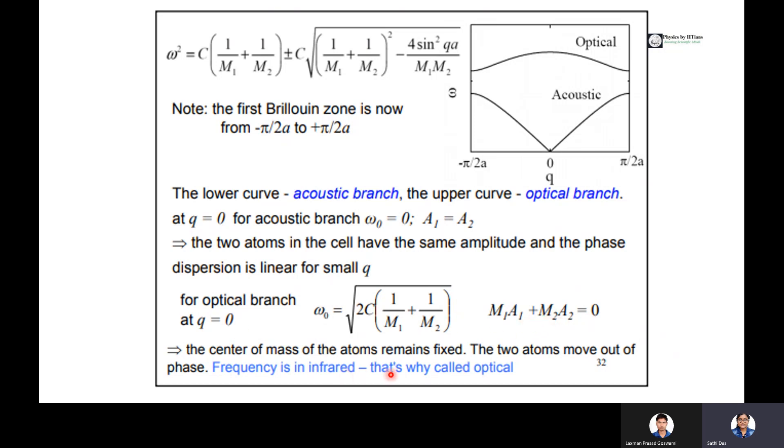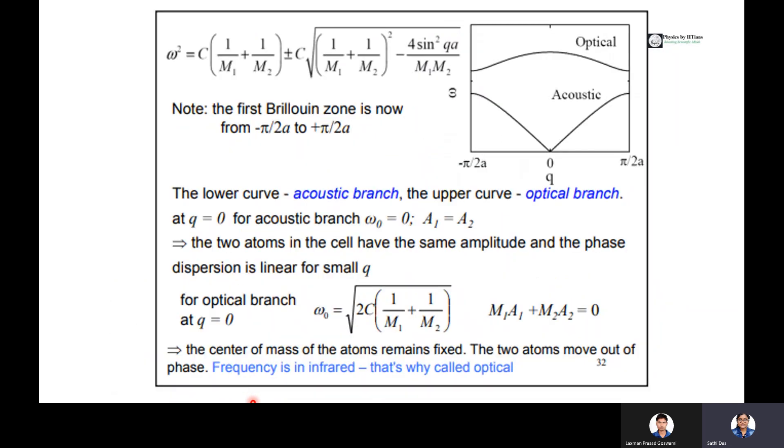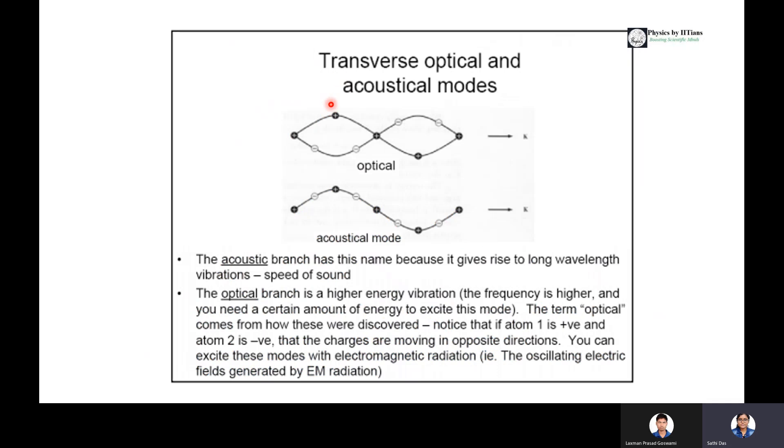For the optical branch at q equals 0, M1A1 equals minus M2A2, so the center of mass is fixed but the two atoms move opposite to each other. In the optical mode, two adjacent different atoms move against each other, while in the acoustic mode they move together. This is the optical mode, one with upward direction, another with downward direction, and for the acoustical mode their modes are similar.